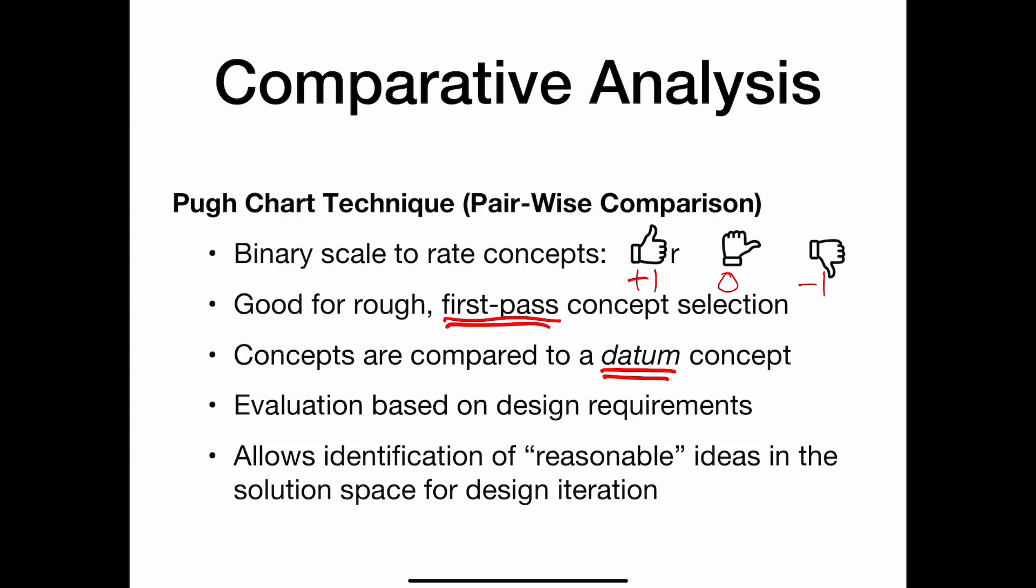So part one of Pugh Charts is that you're doing a pairwise comparison of all of your concepts to a datum. Part two of a Pugh Chart is that you have to pick the things that you're going to evaluate all of these concepts on. And all of your concepts should have rational criteria that you use to evaluate each one, and these criteria should come from your design requirements.